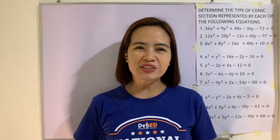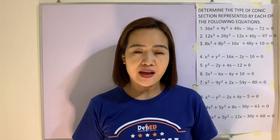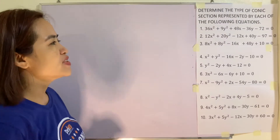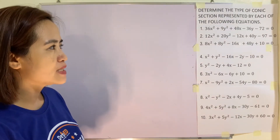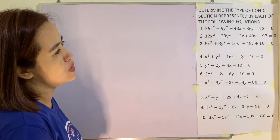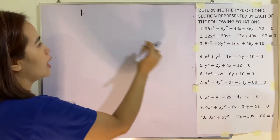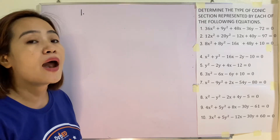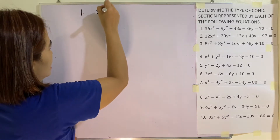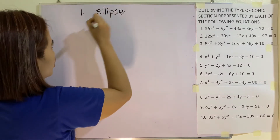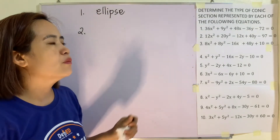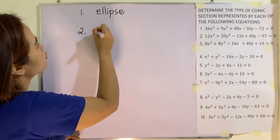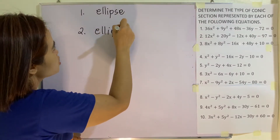Let us determine now whether the given equation is a circle, a parabola, an ellipse, or a hyperbola. Number one: 36x squared plus 9y squared plus 48x minus 36y minus 72 is equal to 0. Both x squared and y squared have numerical coefficients and they are both positive. So that is an equation of an ellipse. Same with number two — both x squared and y squared have numerical coefficients and they are both positive. Therefore, it is also an ellipse.